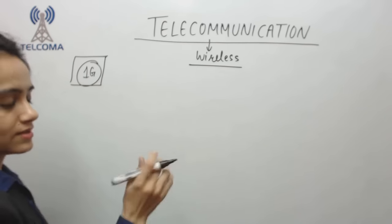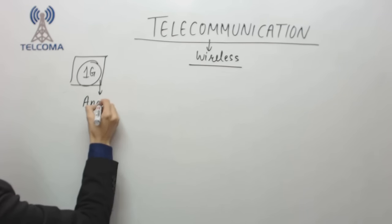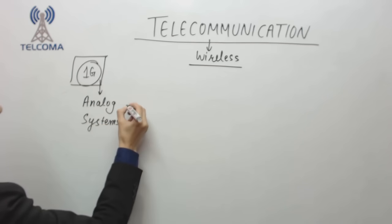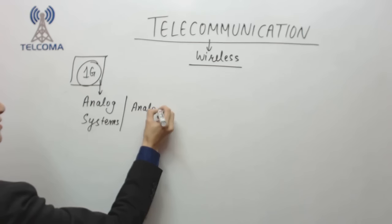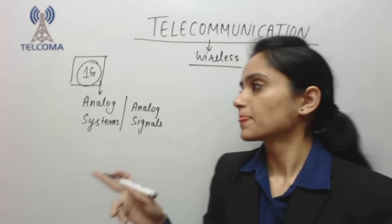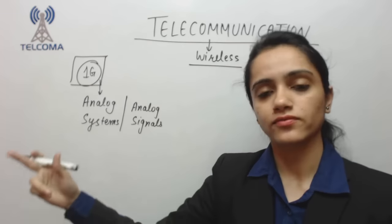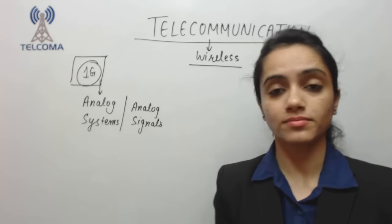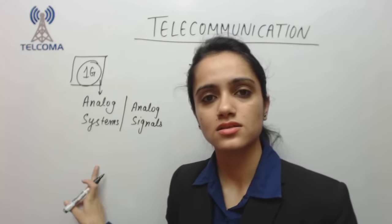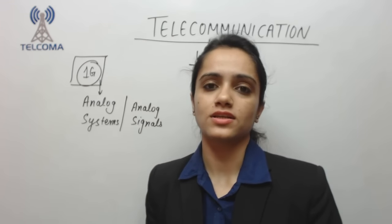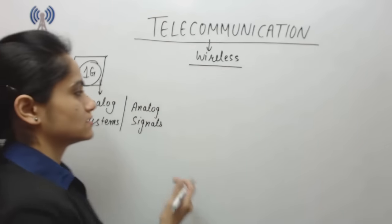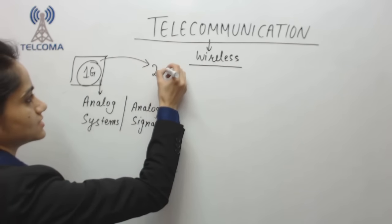In 1G, they preferred analog signals. All processing was done with analog signals — for example, the waveform of a voice is an analog signal, not converted into digital. So 1G uses an analog system. The disadvantage of analog signals is that they are not able to cover a long distance, which led to the limitations of 1G. After that, we had to move to the digital era.